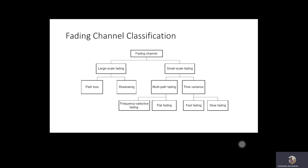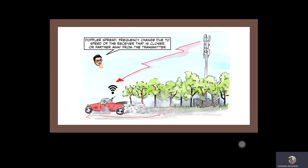The second class of small scale fading is time variance due to speed — what I call Doppler spread. Looking at the drawing, the car is moving at a very fast speed and moving away from the transmitter across different distances. In the case of Doppler spread, it will encounter a frequency shift — the carrier frequency shifts due to the relative motion of the receiver, depending on whether they are moving closer to or further from the transmitter.